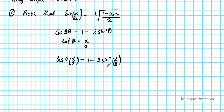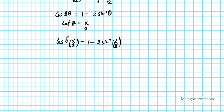We are going to use algebraic processes to isolate sine alpha over 2 — we'll get rid of the 1, the 2, and then the square. First, on the left side, you notice we are doubling half of an angle, so the 2's divide out, giving us cosine alpha equals 1 minus 2 sine squared of alpha over 2.